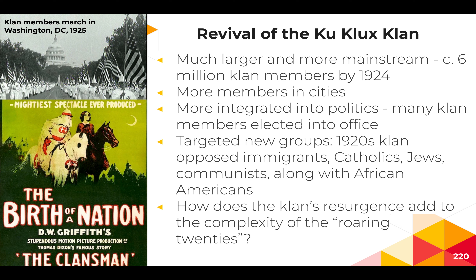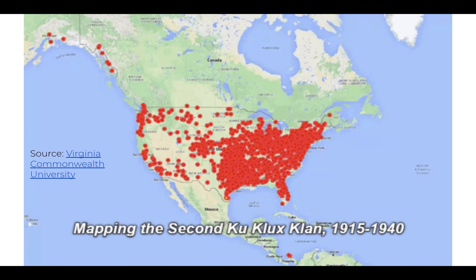Racial violence was by no means limited to Klan activity. The 1921 Tulsa Massacre was an example of the U.S. government actively participating in the destruction of a vibrant Black community in Tulsa, Oklahoma — nicknamed 'Black Wall Street' because the community was independently successful, building their own businesses and owning property without working for the white community. It was really the fear of Black success that triggered the violence.